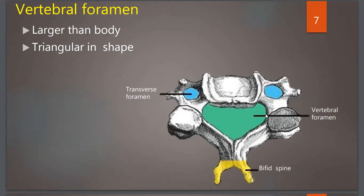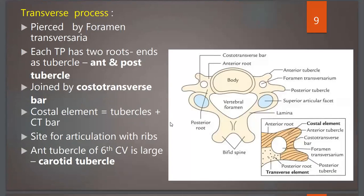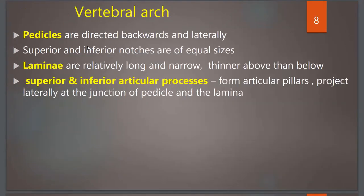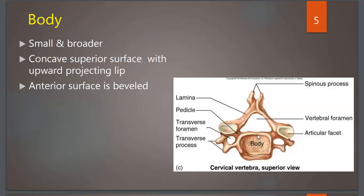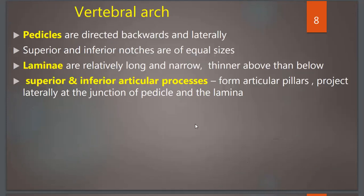The vertebral arch has pedicles which are directed backwards and laterally. Superior and inferior vertebral notches are of equal size. The laminae are relatively long and narrow, thinner above than below. The right lamina and left lamina fuse to form the spinous process, which is basically bifid. The superior and inferior articular processes form articular pillars that project laterally at the junction of the pedicle and lamina.